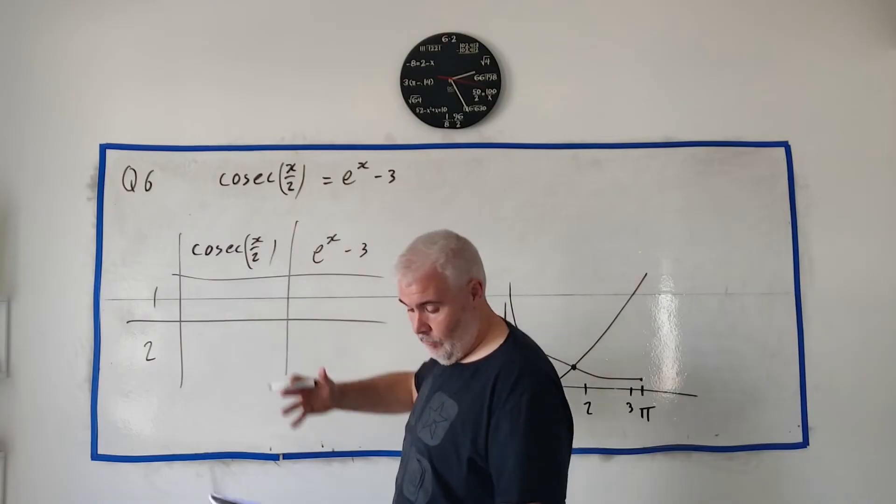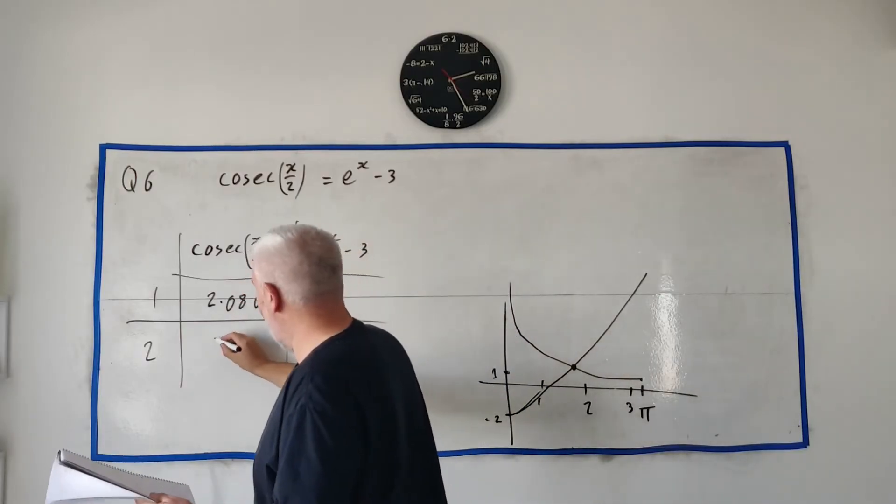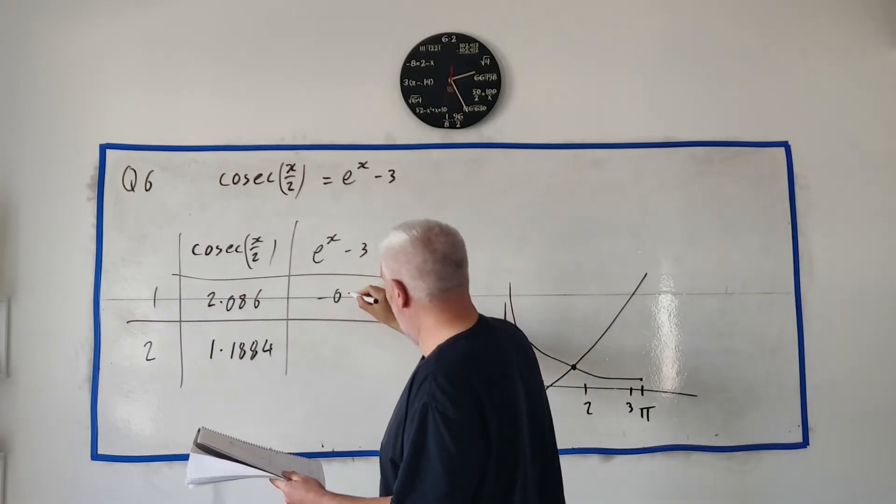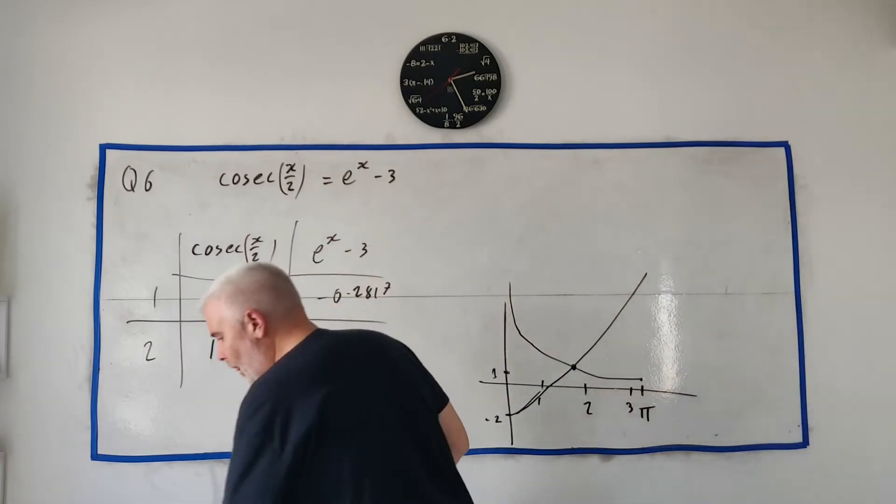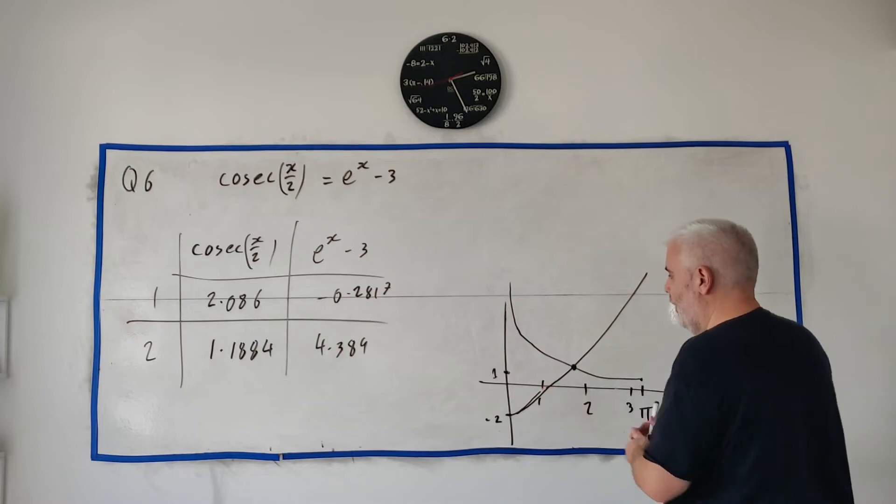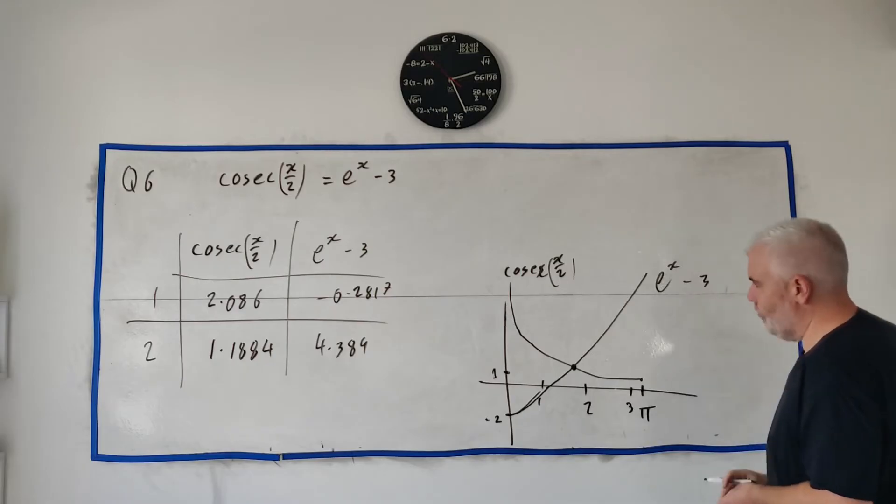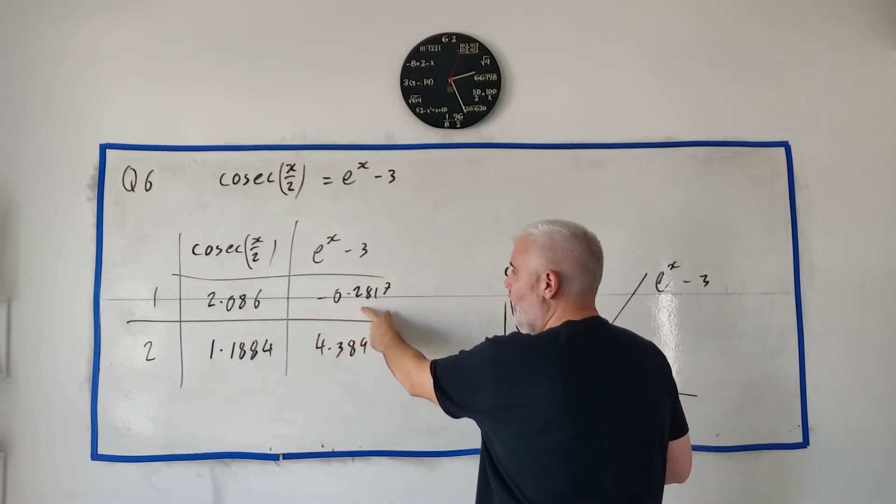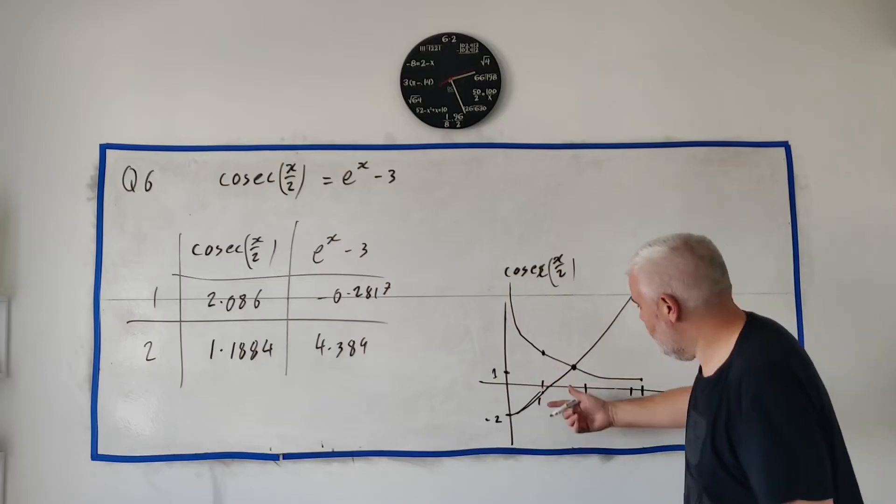And I just fill in the numbers. They've asked 1 and 2. So basically, I fill 1 into here and what do I get out? I get 2.086. I fill 2 in and I get 1.1884. I put 1 in here. I get minus 0.2817 and I put 2 in. I get 4.389. And what does that tell us? So when I put 1 in, let's write these in. This is cosec of x over 2. This one here is e to the power of x minus 3.